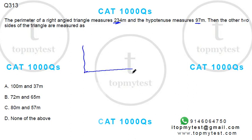So you have 234 out of which hypotenuse is 97. So the balance two will add up to 234 minus 97. 234 minus 97 will be 137. So the other two sides should add up to 137.